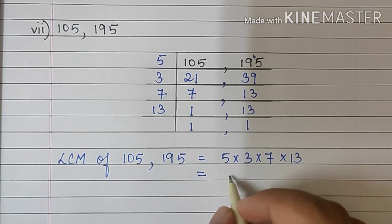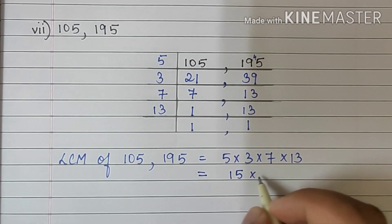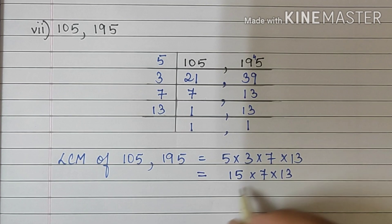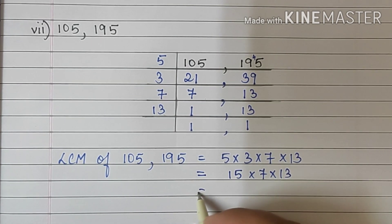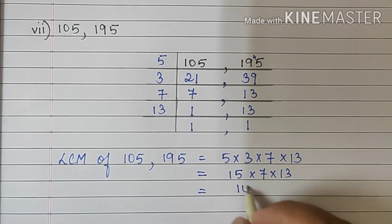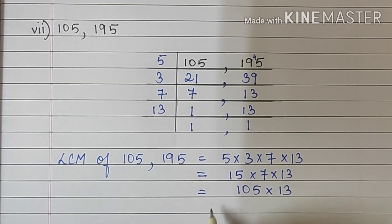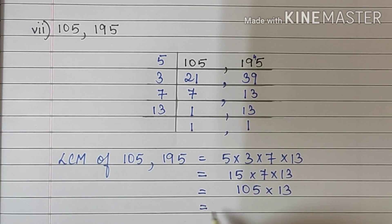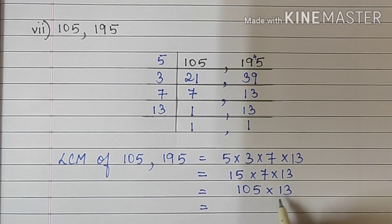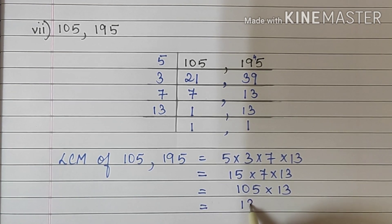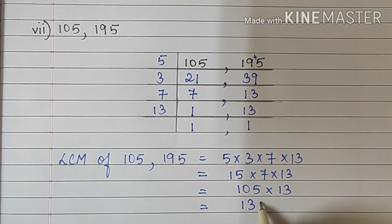5 multiplied by 3 is 15, into 7 into 13. 15 into 7 is 105 multiplied by 13. 105 multiplied by 13 — you will have to do it in the rough column. When you do it you get the answer 1365.